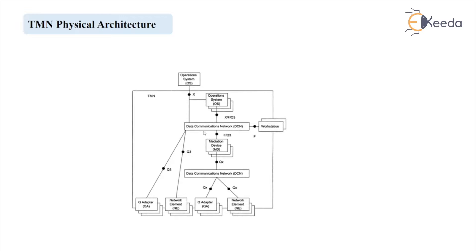Let's start to understand the theoretical background behind it. The model for the TMN Physical Architecture is as shown, where the Physical Block could be the embodiment of one or more blocks, besides its equivalent function block. The meaning of this is: if this is one of the Physical Blocks — for example, the Q Adapter — you can observe that there are multiple blocks of Q Adapter ready to work the function at the same time. So it is known as the embodiment of one or more blocks, besides its equivalent functional block.